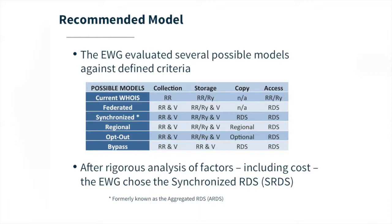The EWG looked at a number of different models. You'll see the models that we analyzed on this slide. Each of these models differs in how the data is being queried or copied into the RDS. We looked at the current WHOIS and really analyzed elements of that. We then looked at a federated model, which was a distributed model that pulls data directly from the registries and the validators. Then we looked at a synchronized model, where the data is pushed to a common hub and then distributed to multiple data centers.